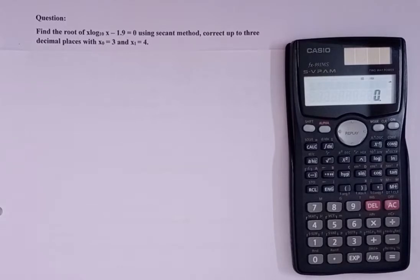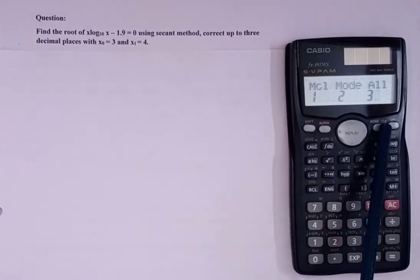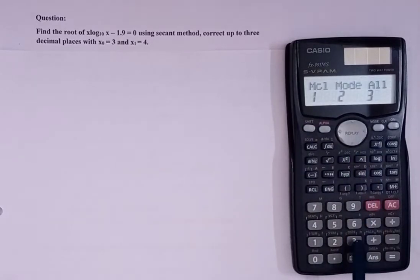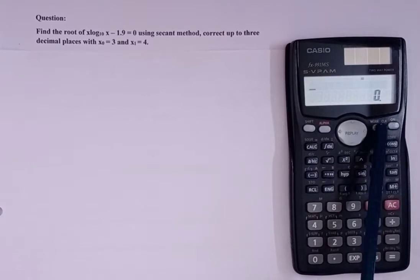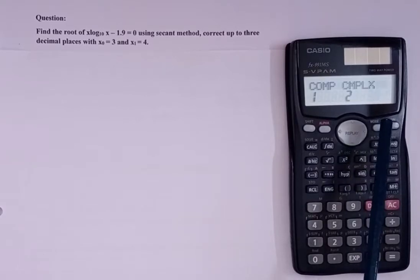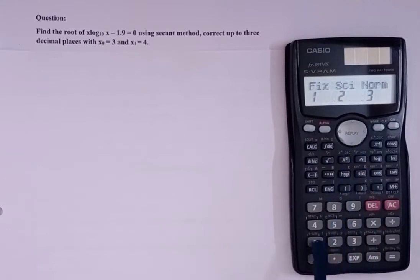First of all, we will reset the calculator. For that, press Shift and Mode and 3, equal to, equal to. Then, to fix the decimal places, press Mode 1, 2, 3, 4, and 5.